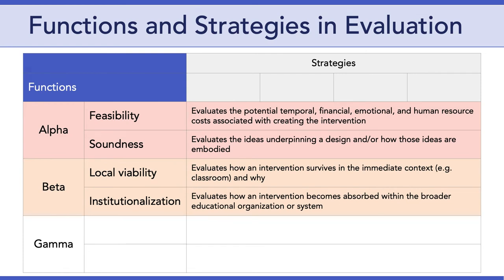The second stage is beta testing, which is conducted when your intervention is more or less a functional system. This kind of testing focuses on using and evaluating your intervention in context — it's where the functionality of your intervention and how it interacts in the context are studied. Typically, beta testing focuses on two main functions: local viability and institutionalization. Evaluating local viability focuses on how an intervention survives in the immediate context and why — an example of an immediate context might be a real classroom. Evaluating institutionalization, on the other hand, focuses on how an intervention becomes absorbed within the broader educational organization or system.